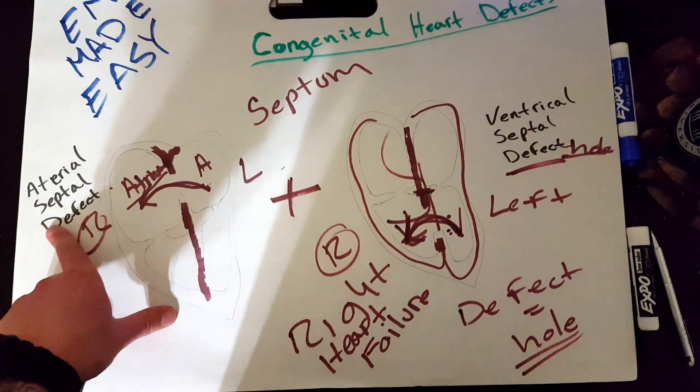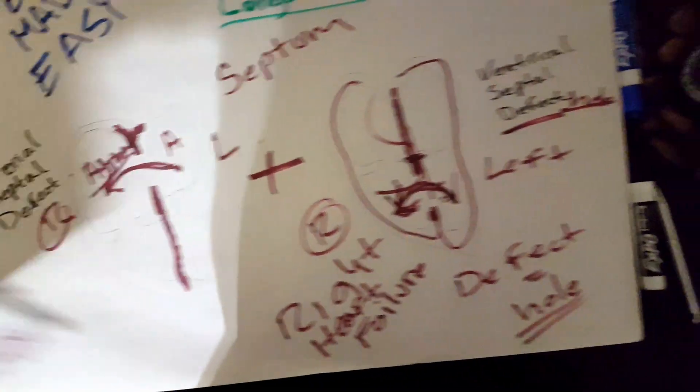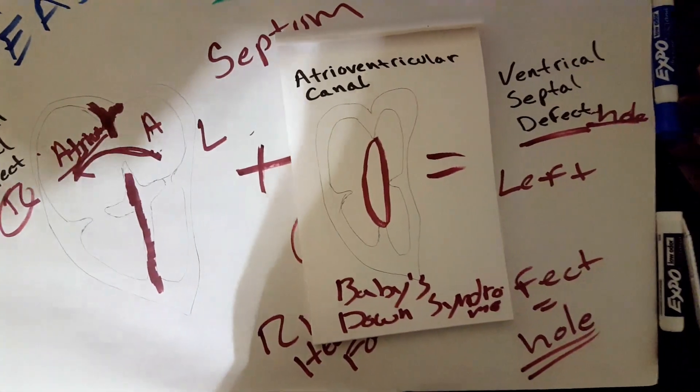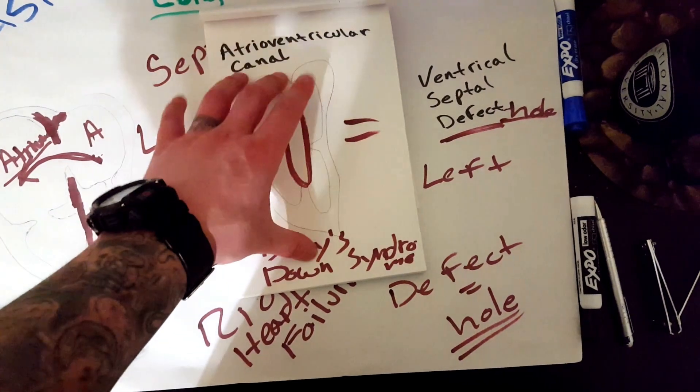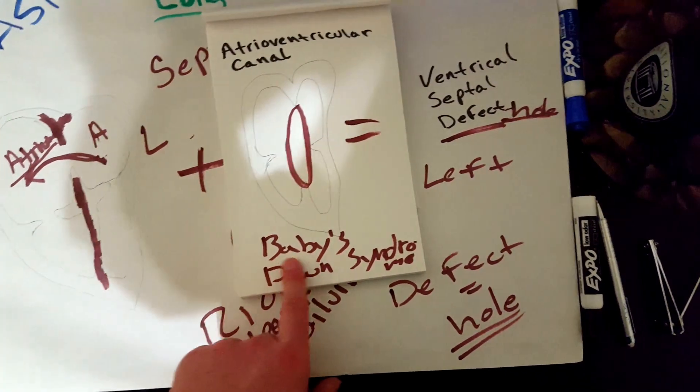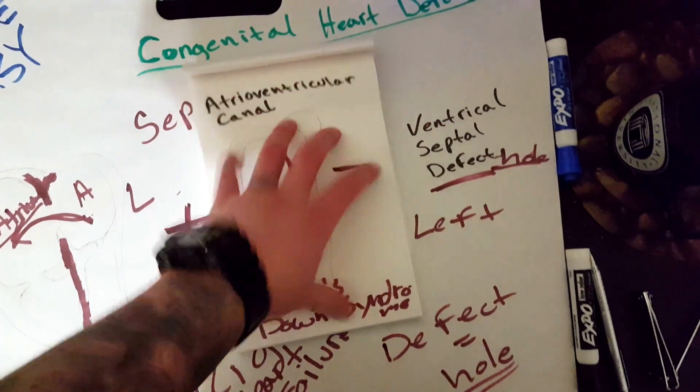And then, atrial septal defect plus ventricular septal defect equals atrioventricular canal. There you go. That's all it is. But, this one is usually only seen in babies with Down syndrome. I hope this video helps out.